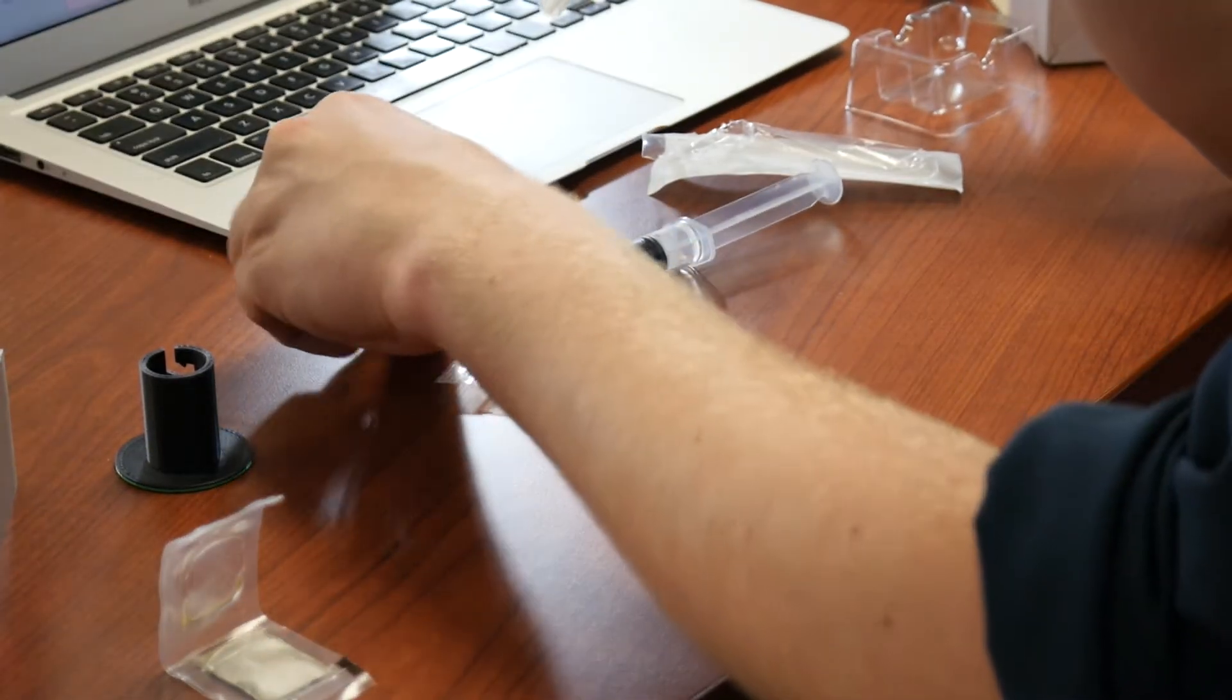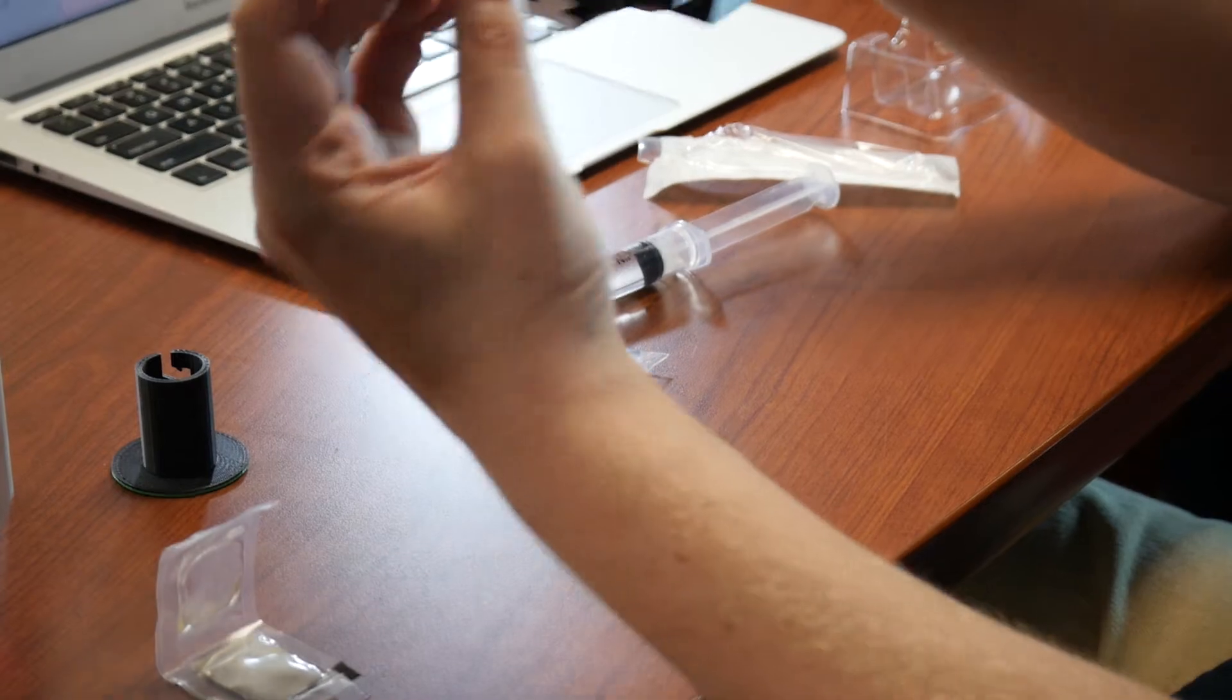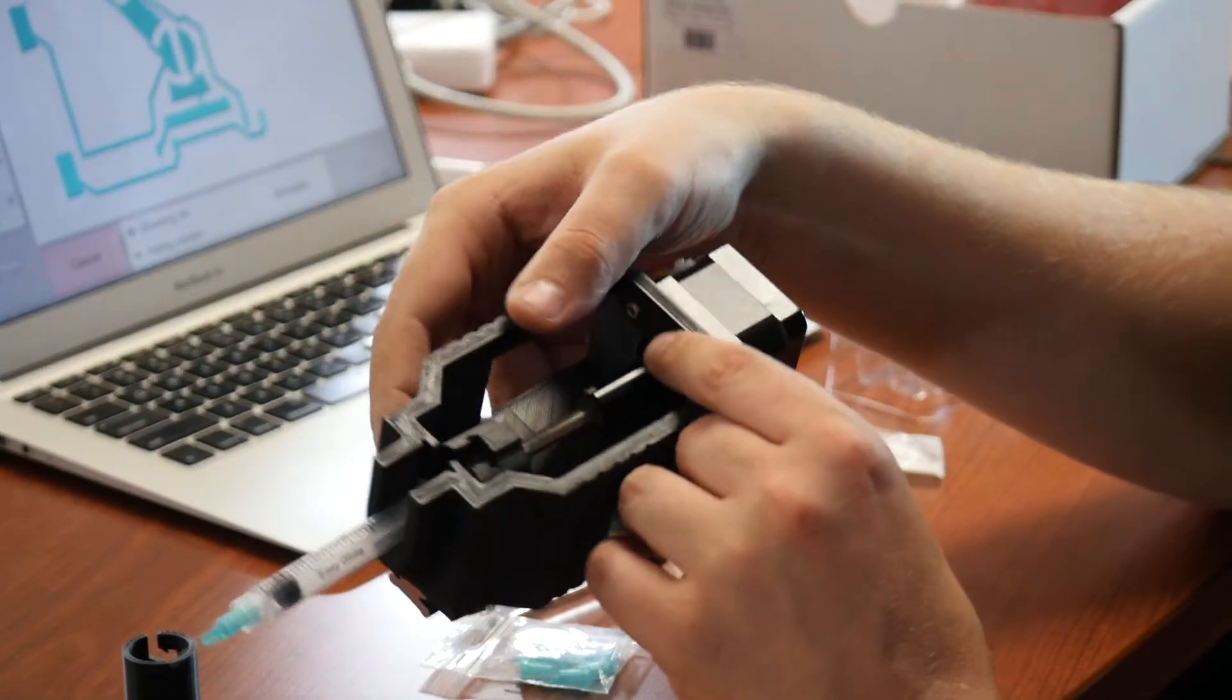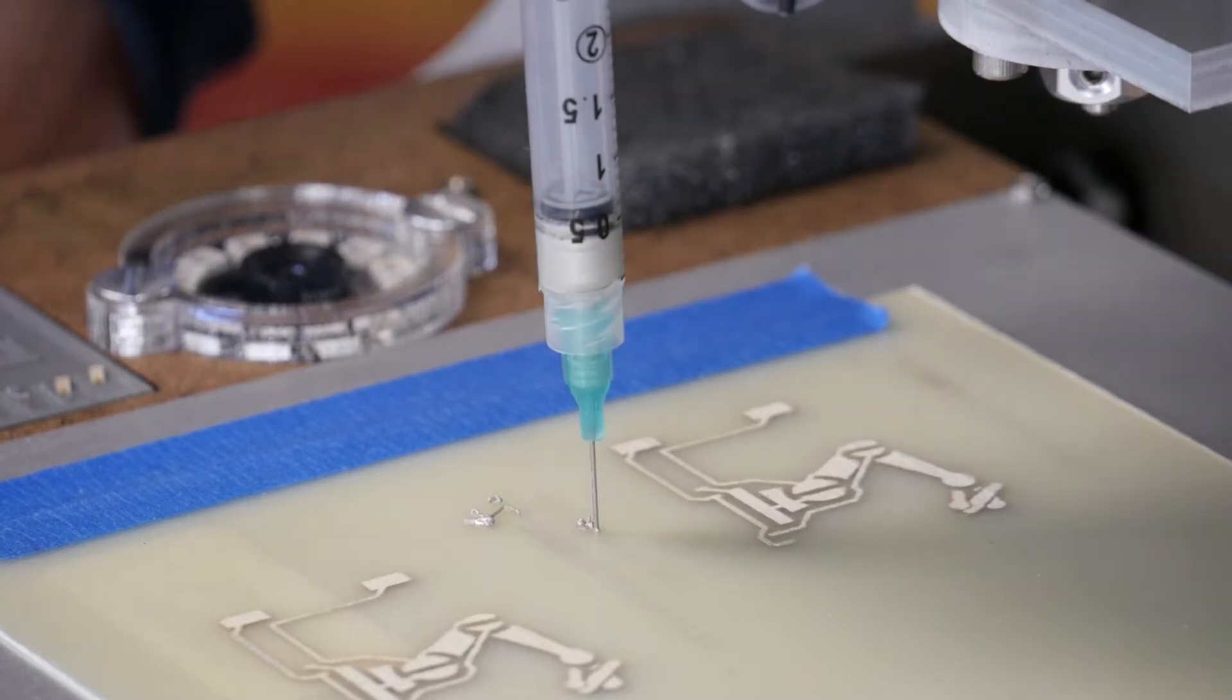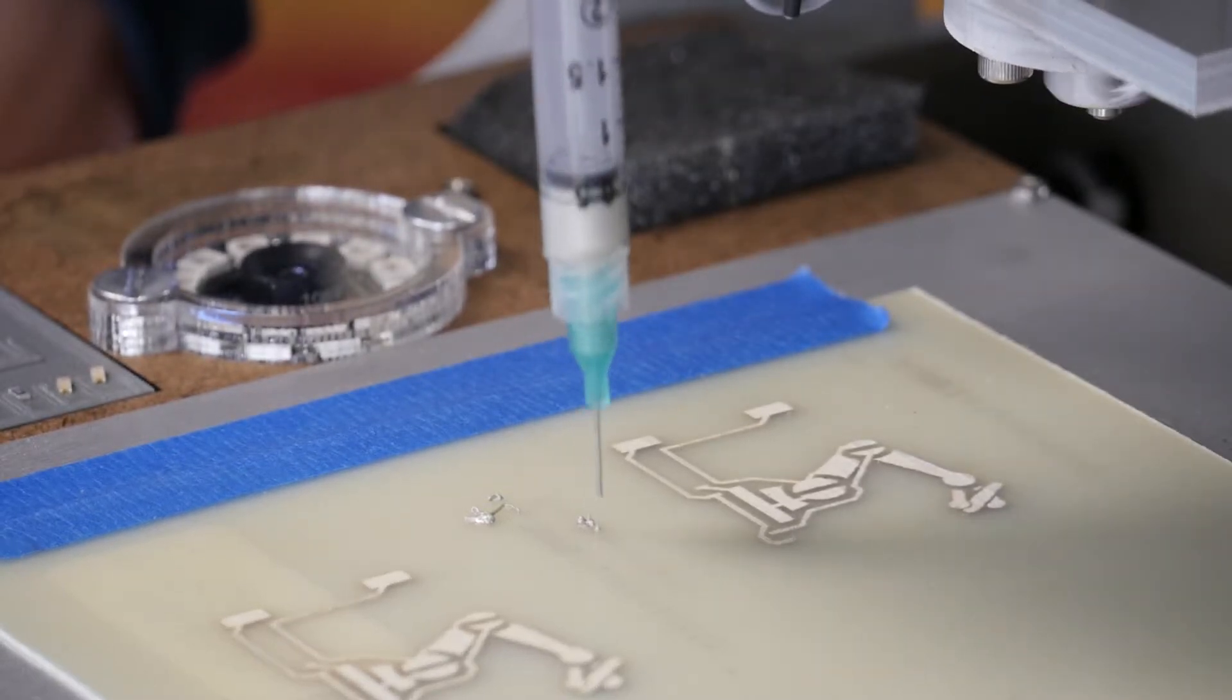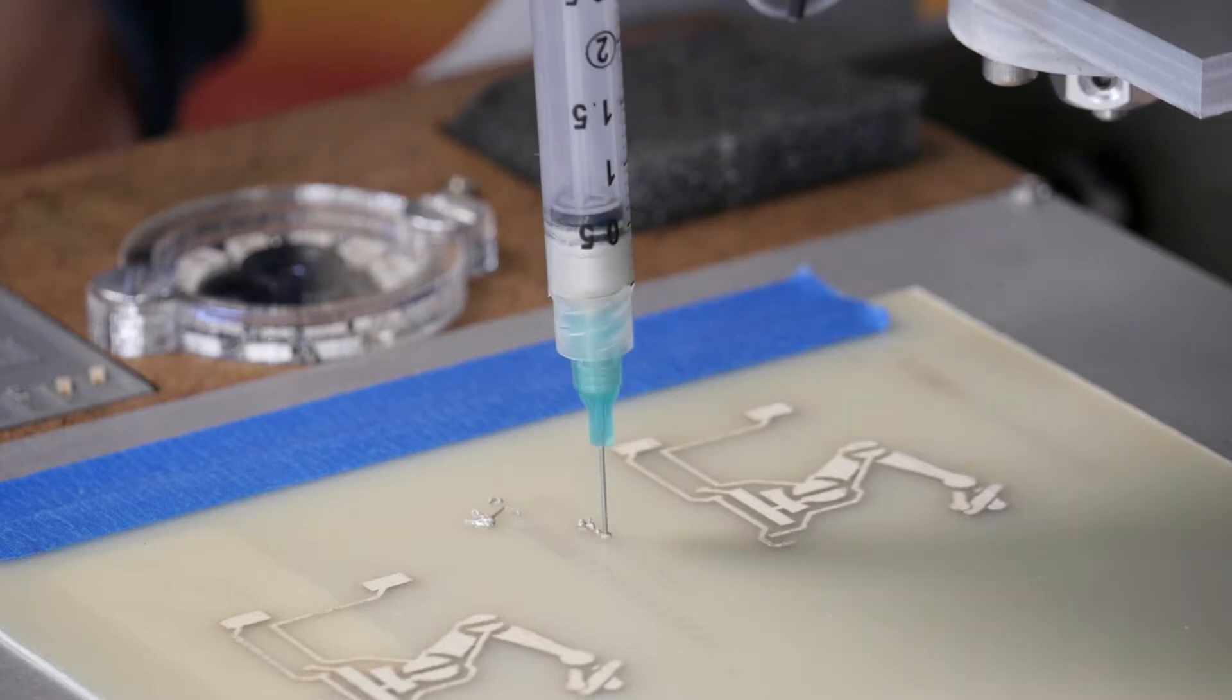Squink essentially dispenses small little dots of glue using this syringe and this motor which is a linear actuator. The ideal dot is kind of like a Hershey kiss and it's quite possible that Squink makes the world's smallest Hershey kisses.